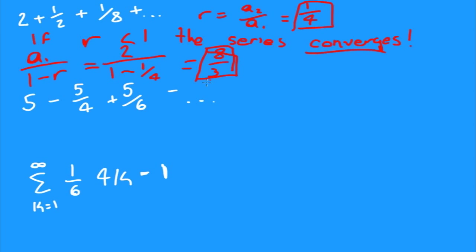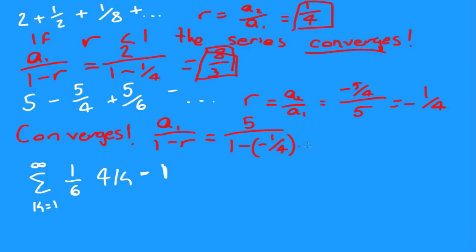Now let's do this one. Get our r: a2 over a1, which would be equal to negative 5/4 over 5, equals negative 1/4. Negative 1/4 is smaller than 1, right? So we have a series that converges. Its sum is going to be the first term over 1 minus the ratio: 5 over 1 minus negative 1/4 would be equal to, drum roll, 4. And that is the sum.